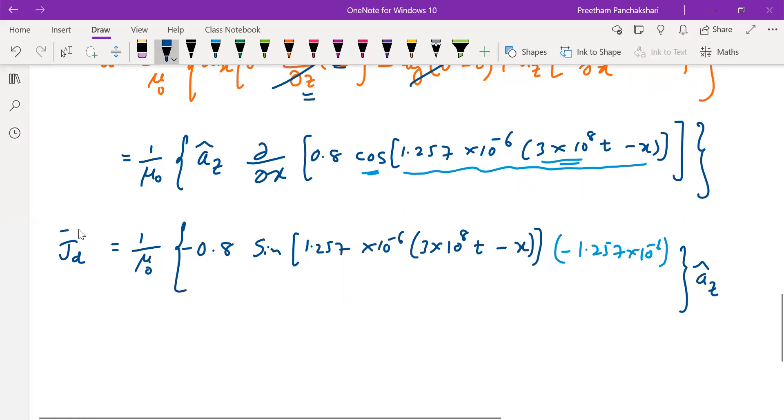Finally we have the vector Jd here, and we want only the magnitude. Before that let me put everything together. Here is minus, this is minus, and here also minus. Minus minus minus is plus, so it's going to be 0.8 × 1.257 × 10^-6 divided by mu naught into sine of the complete argument 1.257 × 10^-6 × 3 × 10^8 t - x into a cap z.